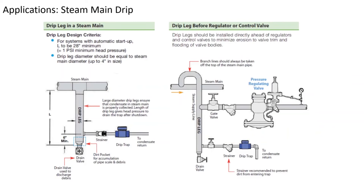Unfortunately, there's no one universal type of steam trap that works in every application. Different operating conditions, load conditions, and piping arrangements mean there's no single solution. What we'll look at is what each application requires the steam trap to do, then marry the trap characteristics to the application characteristics to give guidance on what type of trap works best where.